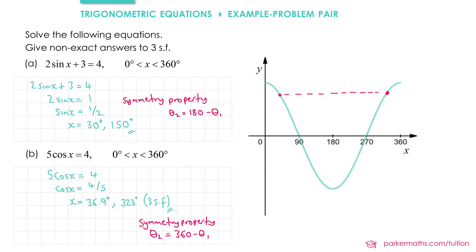So our strategy for answering questions like this: first, rearrange to get sine, cos, or tan on its own. Then use your inverse trig function to get a first solution, and then use the symmetry property to get a second solution if there is one within the region you're interested in.